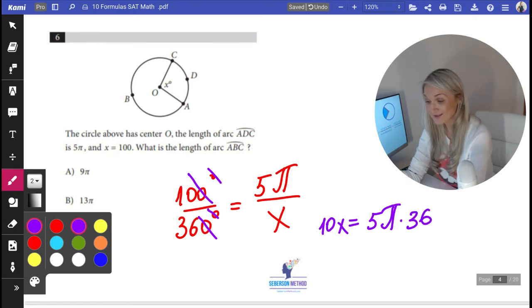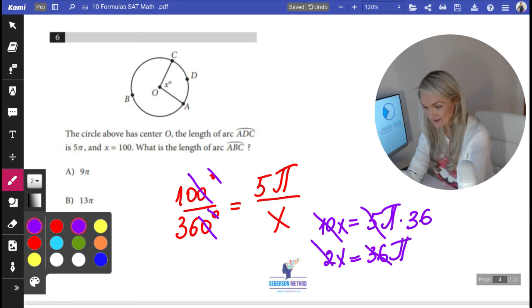Now I can easily divide by 5 on both sides to get rid of this 5. Now I have 2X is equal to 36π. Now I can divide by 2 on both sides, and I'm going to say that X is equal to 18π.